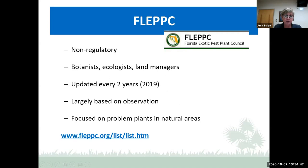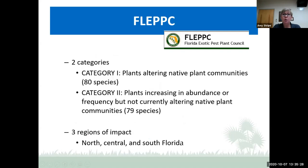FLEPPC is a group of volunteer botanists, ecologists, and land managers from fish and wildlife, the University of Florida, the Corps of Engineers, FDEP, and the National Park Service. They update their invasive plant list every odd year — the last was 2019. Category one is plants that are altering native plant communities — currently 80 species. Category two is plants increasing in abundance or frequency but not currently altering native plant communities — 79 species. Plants can move between these categories. There are three regions of impact: north, central, and south Florida.